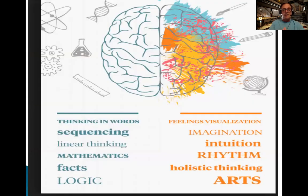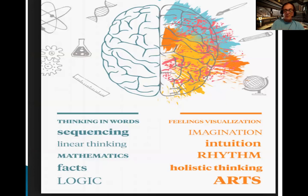We actually use both sides of the brain. When you're building a video game — designing it, putting in different colors and textures — you're using the right side, the creative side. But when you're programming and using logic, you're using the left side. So we develop both. And by the way, video games have been proven to stimulate and increase brain function. They're actually good for the brain because you're thinking, calculating, and trying to solve things.